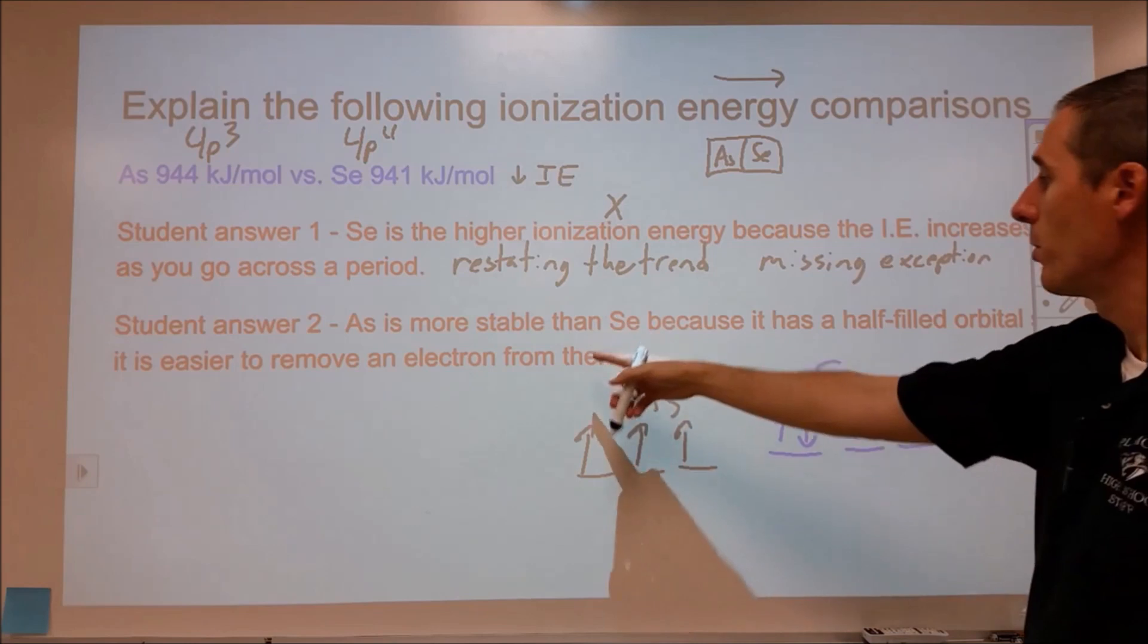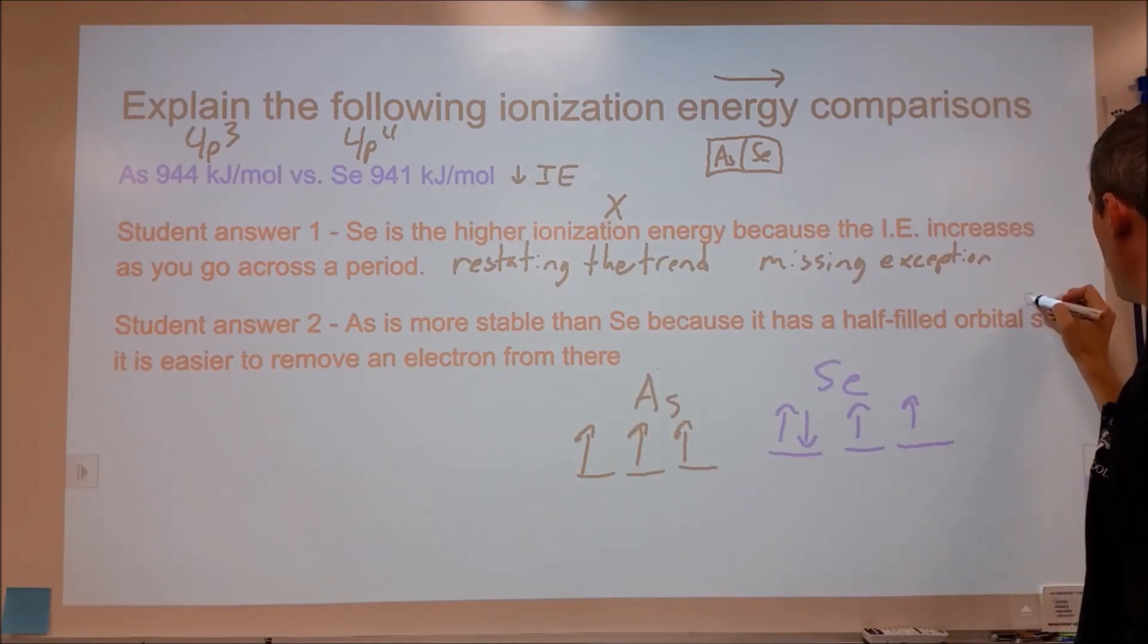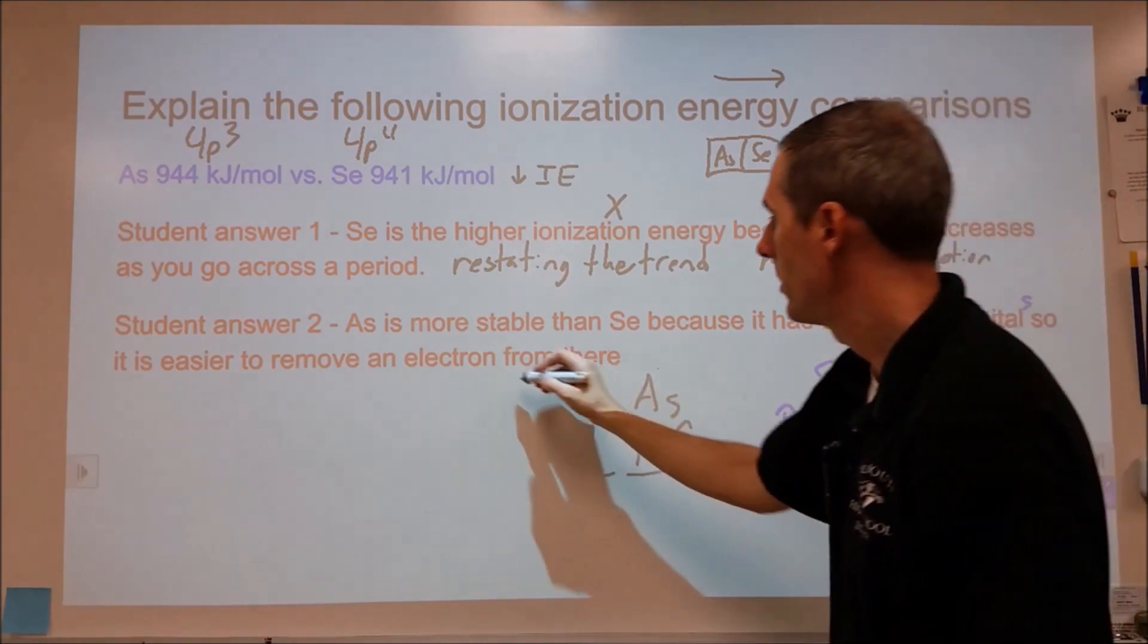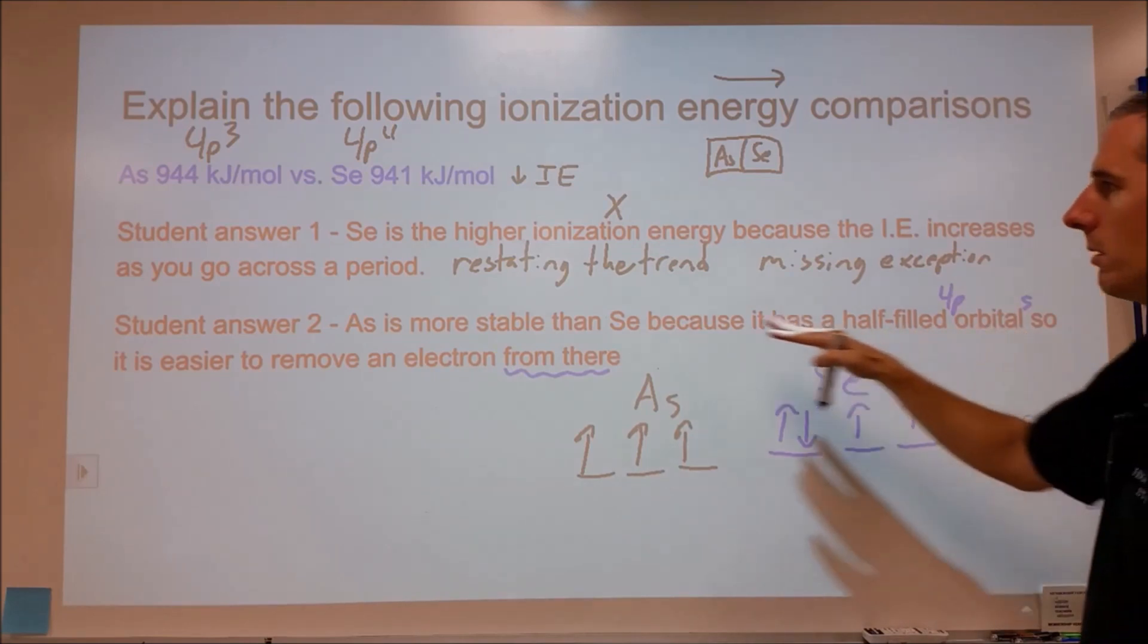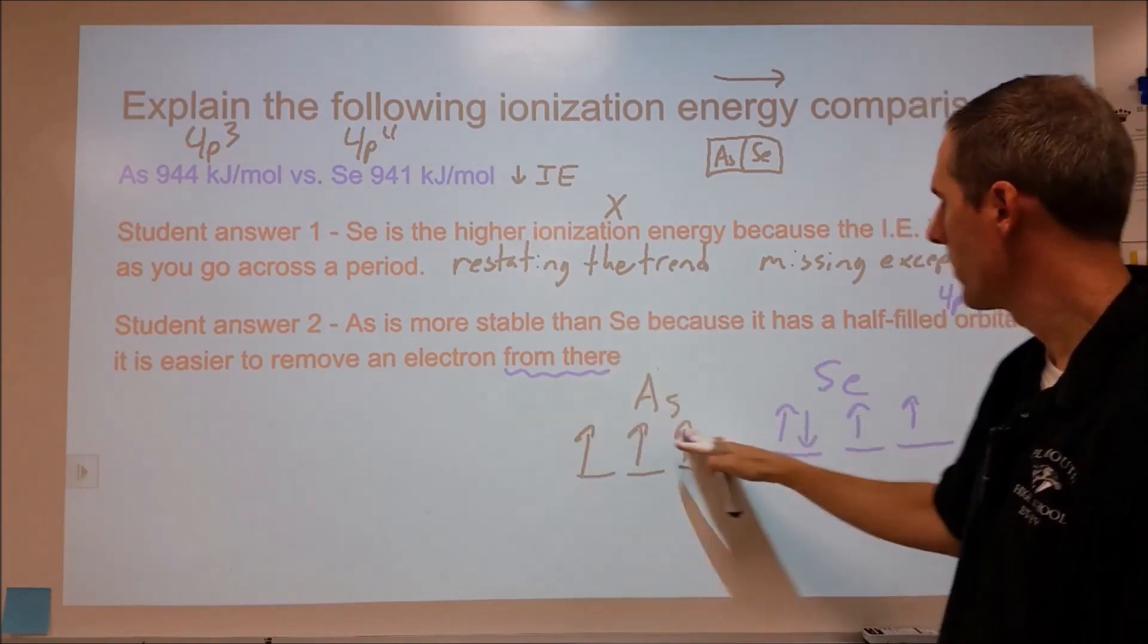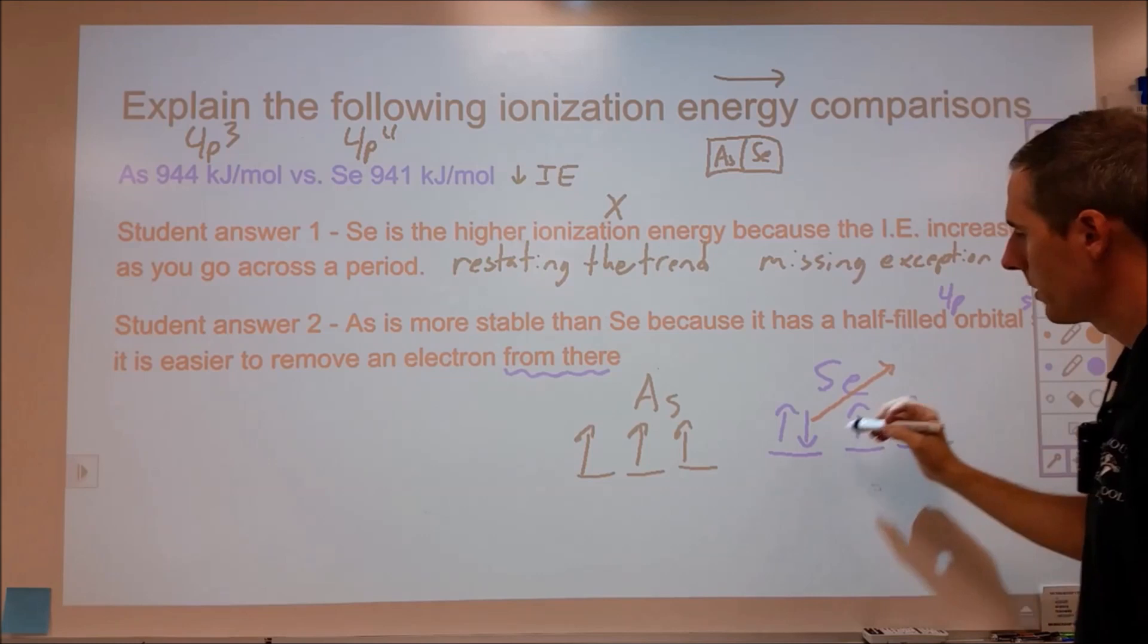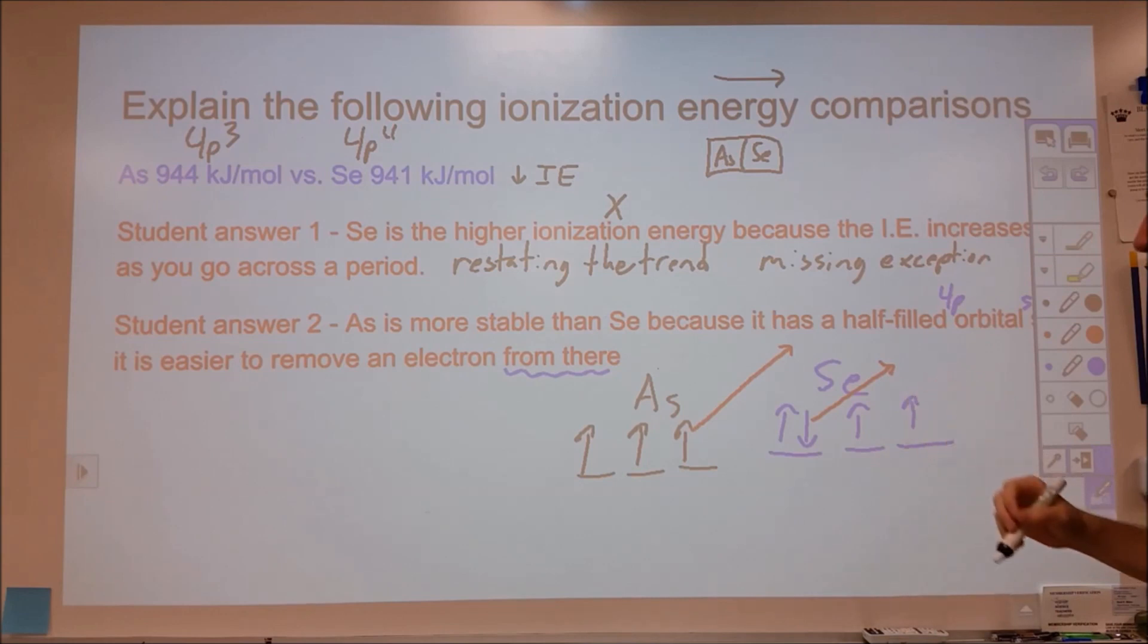So this one is saying arsenic is more stable than selenium because it has half-filled orbitals. It should probably specify that they are the 4p orbitals, so it's easier to remove an electron from there. This is probably not a great choice of word because we were just talking about arsenic. So from there it doesn't really clarify. The one that's easier to remove from is the selenium. What we're finding is that the amount of energy needed to remove the selenium electron is slightly less than that from the arsenic.